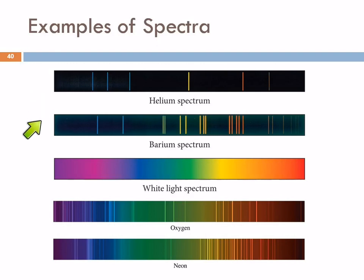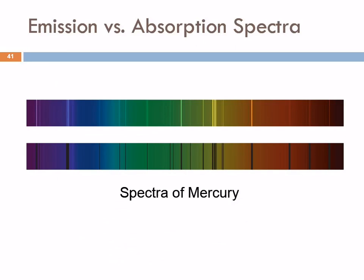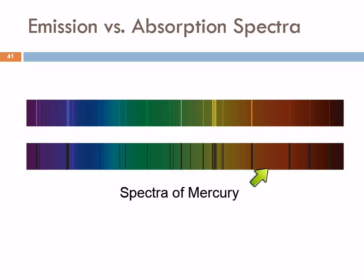Here's the helium spectrum, barium, white light like from the sun, and there's oxygen and neon — a little hard to see in a well-lit classroom. You can do emission spectroscopy or absorption spectroscopy. In emission, we see these bright bands. In absorption, we see the reverse — dark lines at specific wavelengths because the element is absorbing that frequency and letting the other frequencies pass through.